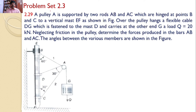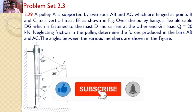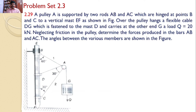In this tutorial, we will discuss problem set 2.3, problem number 2.29. A pulley A is supported by two rods AB and AC which are hinged at points B and C to a vertical mast EF as shown in the figure. There is a pulley connected with two rods AB and AC, and the other ends of the rods AB and AC are connected to a vertical member EF.